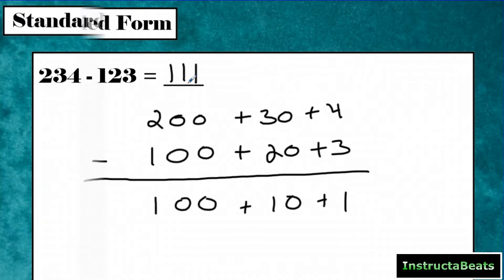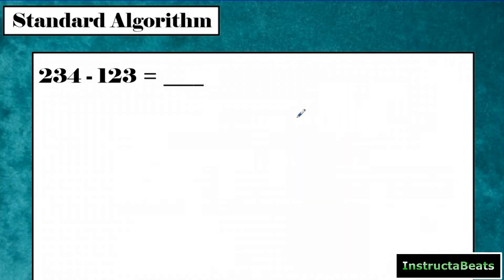Today, we're going to look at the standard algorithm. So when we do the standard algorithm, we're actually doing something very similar, except we're not writing the numbers in expanded form. The first thing we're going to do is we're going to write our number out, 234. And then just like we did with the expanded form, we're going to line up our place values. Now, the reason this is a little bit quicker, obviously, you can already tell is I'm not writing out a 100, I'm not writing out a 20, I'm not writing out a 3.